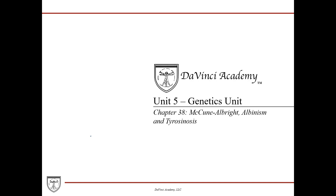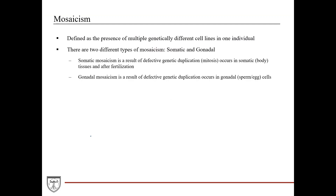This is the last lecture for the genetics unit. In this lecture we're going to talk about three different diseases: McCune-Albright syndrome, albinism, and tyrosinosis. Before we can talk about McCune-Albright syndrome, we need to talk about mosaicism, because it's a classic example of mosaicism.